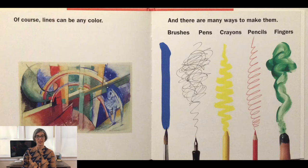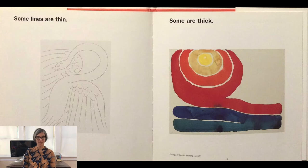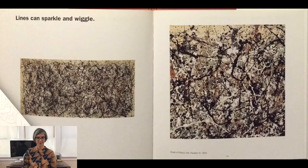Lines can be any color and there are many ways to make them — using brushes, pens, crayons, pencils, fingers. Some lines are thin, some are thick, some lines can sparkle and wiggle.